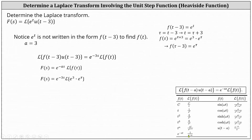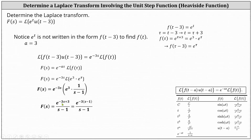This indicates the Laplace transform is e to the power of negative three s, times e cubed times one over the quantity s minus one, which we can also write as e to the power of negative three s plus three, all over the quantity s minus one. Over the factor of the exponent, we have e to the power of negative three times the quantity s minus one, all divided by s minus one. I hope you found this helpful.